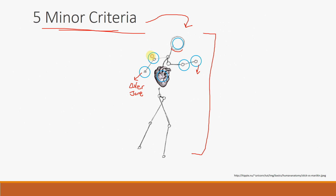Next are the elbow joints. The first elbow represents IV drug use — the person is injecting into the arm. The second elbow represents cultures: blood cultures that are positive but do not meet the specific major criteria thresholds discussed earlier.